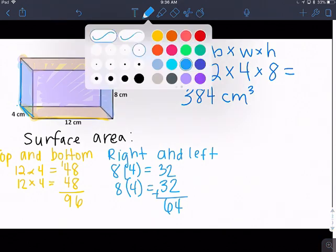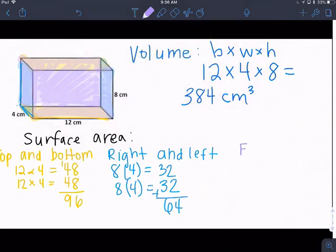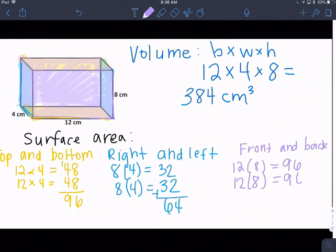And then we have the front and back. And the front is 12, the base is 12, the height is 8. So this is a 12 by 8, and that is 96. But that was the front. So the back is, again, a 12 by 8, which is 96. We add those up and we get 192.